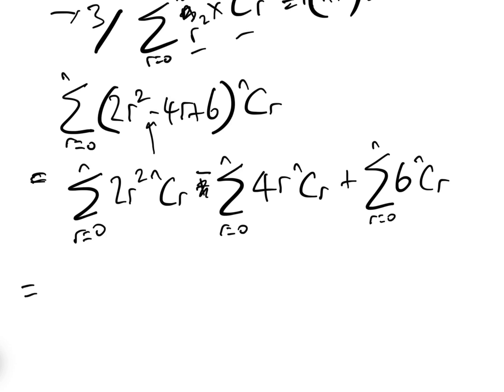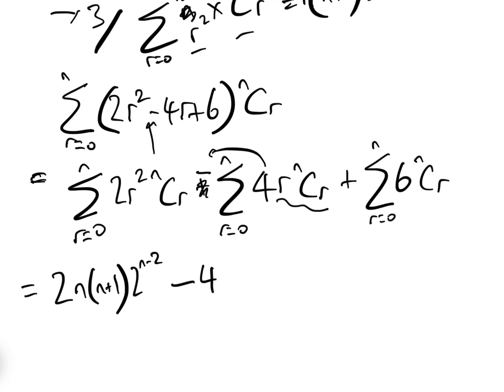Taking the constants out and applying the formulas: we take the two out, and the sum of R squared NCR equals N(N+1)·2^(N-2). Then minus four times the sum of R·NCR, which equals N times two to the N minus one. Then plus six times the sum of NCR, which equals two to the N.